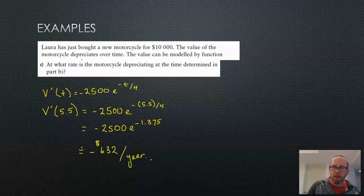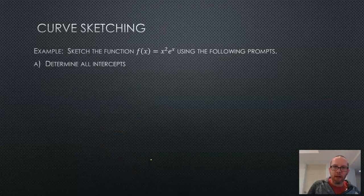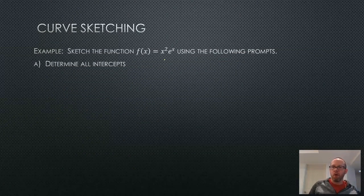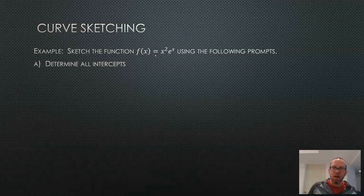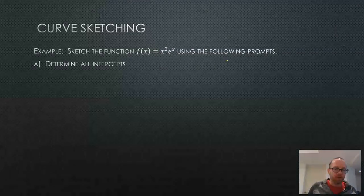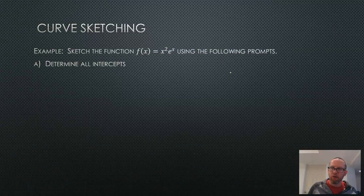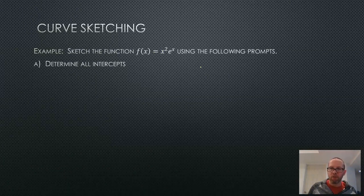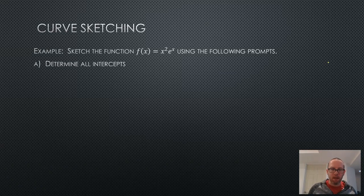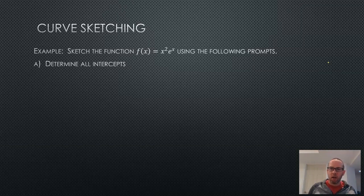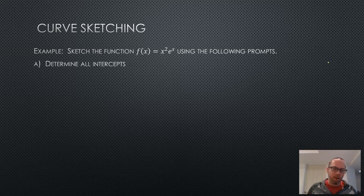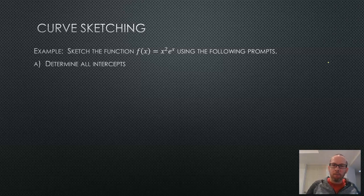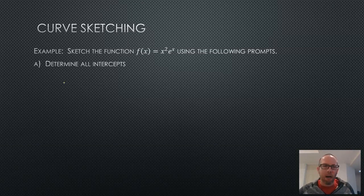The last thing we're going to do today is sketch a curve — this will be the first curve we sketch that involves a mix of polynomials and transcendental functions. We're going to sketch the function x squared times e to the power of x. If you'd like to pause and try it yourself or bring it up on a graphing program, that's fine. We'll use our algorithm for curve sketching to see what this graph looks like.